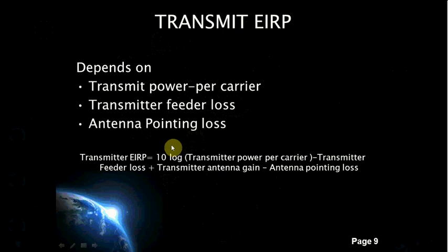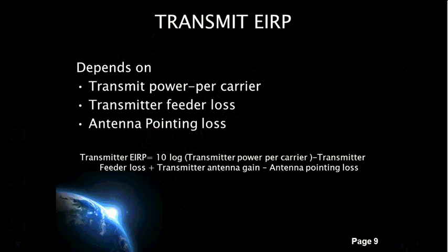Transmitter power per carrier is the power given to the antenna at the earth station to radiate power. Transmitter feeder losses are the losses that occur in the connection between the transmitter and the antenna, such as losses in connecting waveguide filters and couplers. Antenna pointing loss is the loss due to improper alignment of the ground station and satellite antenna. The equation for transmitter EIRP is: EIRP = 10 log(transmitter power per carrier) − transmitter feeder loss + transmitter antenna gain − antenna pointing loss.